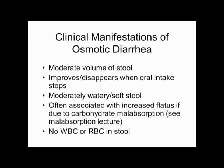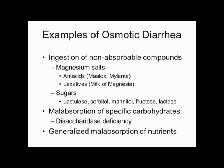Osmotic diarrhea is generally more moderate volume than severe secretory diarrhea, because it depends on what you ate. If you stop all oral intake, it should stop. You generally get moderately watery or very loose stool. Carbohydrate malabsorption with colonic bacterial fermentation generates gas, so some people have increased flatus. There's no damage to the mucosa — no ulcers, no bleeding, no white cells or red cells in the stool. Taking a slug or two of Maalox won't cause osmotic diarrhea, but three slugs every four hours might.